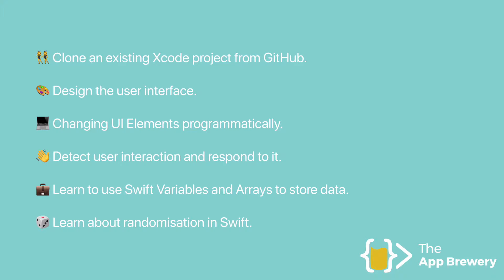In the last lesson, we looked at how we can change UI elements and their properties programmatically by creating IBOutlets, which gives us a reference to that particular thing — be it an image view, a button, or a label — and then we can use our code to actually change its value.